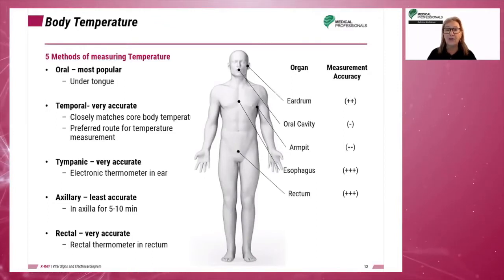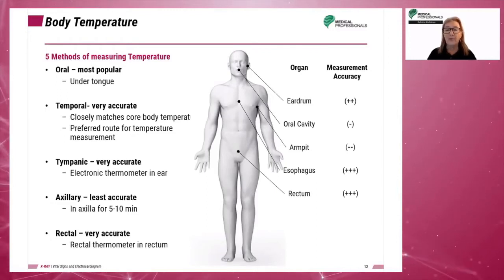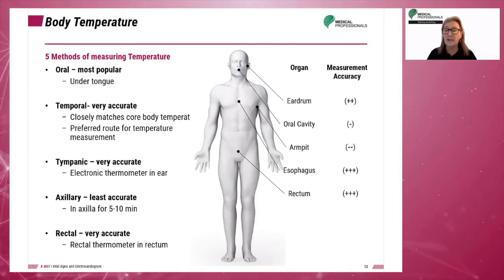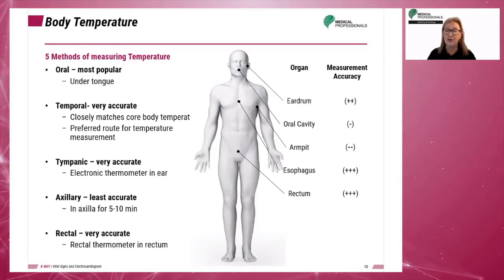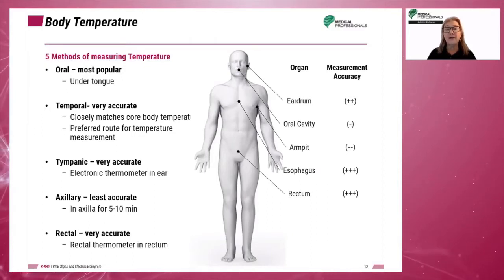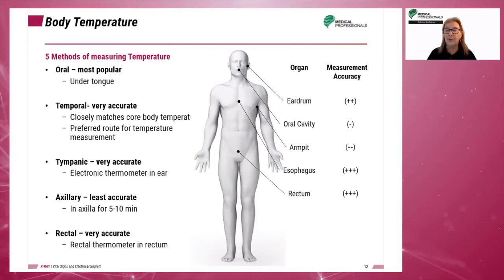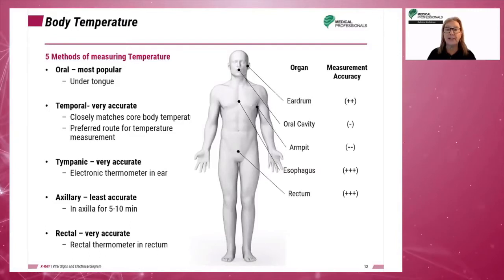A rectal temperature places a rectal thermometer in the rectum for 2.5 to 5 minutes and is mostly used with babies. The normal readings are 1 degree higher than oral temperatures, with a range of 97.5 to 99.5 degrees Fahrenheit or 36.5 to 38 degrees Celsius.